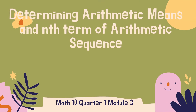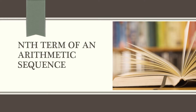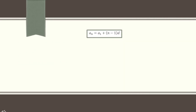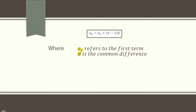In this video, you will learn about the nth term of an arithmetic sequence and the arithmetic means. The nth term of an arithmetic sequence is in the form: a sub n equals a sub 1 plus quantity n minus 1 times d. Here, a sub 1 refers to the first term, d is the common difference, a sub n is the nth term, and n is the number of terms.